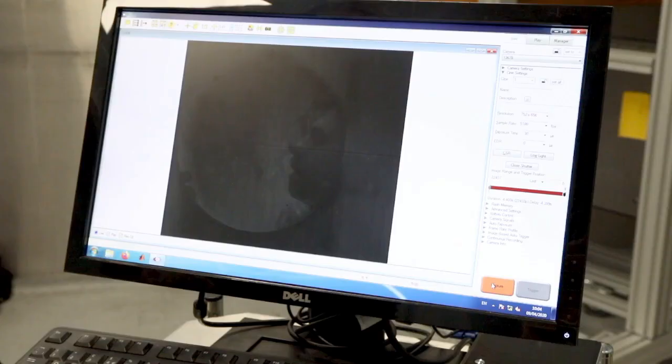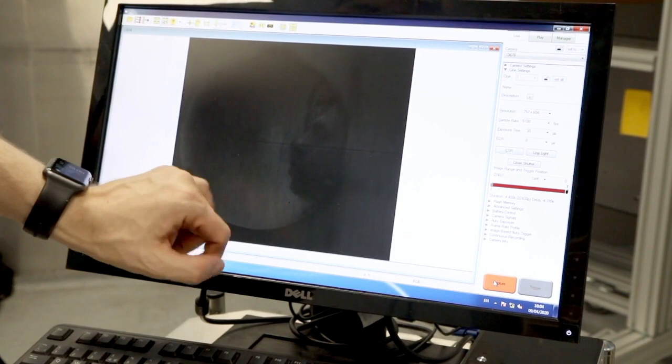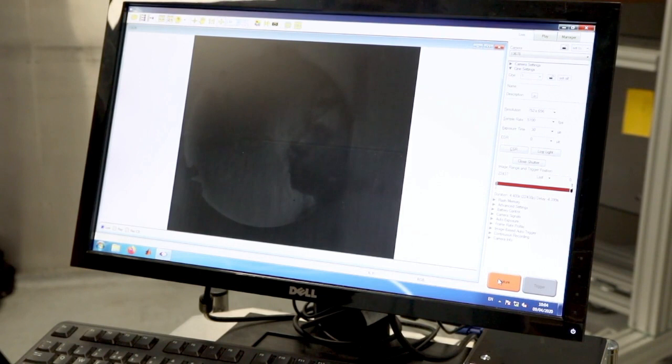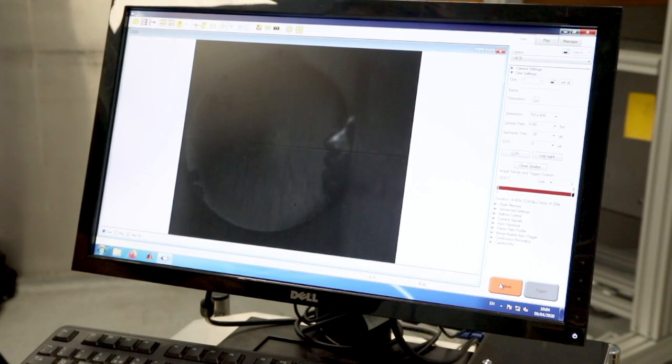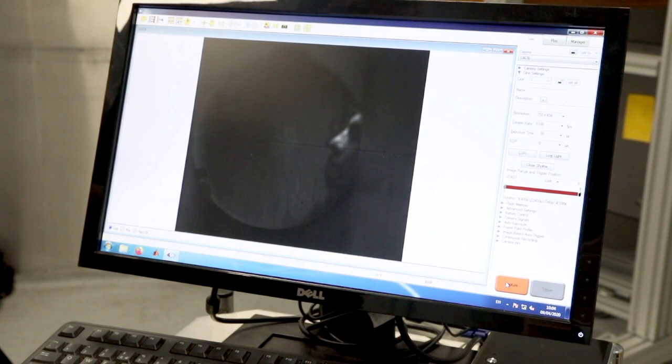Here we can see our Schlieren mirror - this is what the camera sees as it's pointed at it. As Geoffrey breathes, there are flow structures coming out of his mouth. As he exhales, we should be able to see this very strong turbulent jet. There we are, right there - you can see it's a very turbulent flow with lots of interesting structures. From an engineering perspective it's very interesting, but from a healthcare perspective you can see just how fast it travels and how particles containing the virus can travel.